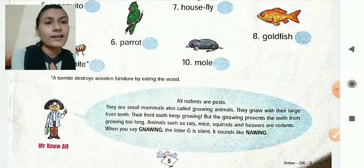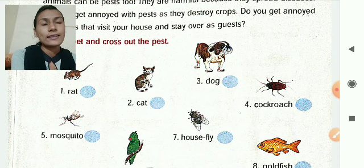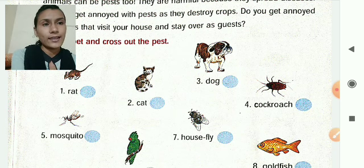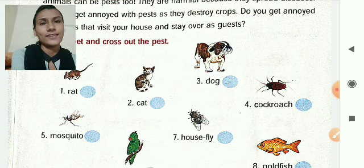When you say 'gnawing', the letter G is silent — it sounds like 'nawing'. So this lesson you have to write in your fair book. That is today's homework. I will send one PDF also, so you can write like that in your fair book. Thank you. Bye-bye.